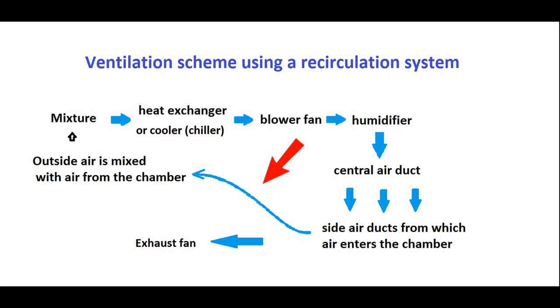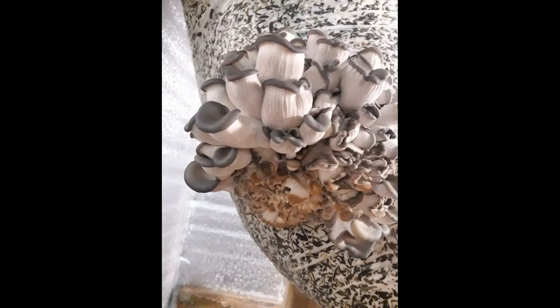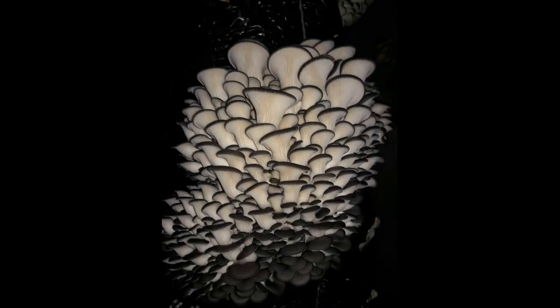What percentage of recirculated air can be used? 40%, 50%, sometimes even 60%. It is important for us that the mushrooms are not deformed and are beautifully shaped so we could sell them for a good price. Therefore, we look at the condition of the mushrooms and empirically determine how much recirculated air can be used.